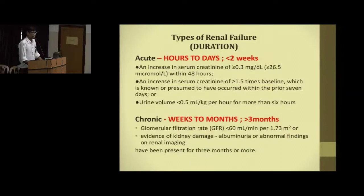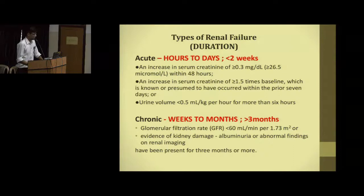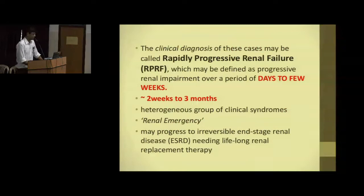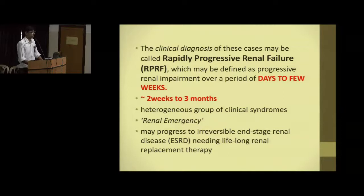This was diagnosed as rapidly progressive renal failure because the history was less than two months and on presentation he had a very high creatinine. Renal failure is defined as increased serum creatinine of more than 0.3 mg/dL within 2 days, or more than 1.5 times the baseline in 2 weeks. Two weeks to three months is the window of maximum kidney damage in RPGN — this is a renal emergency, as every day more nephrons are lost, causing irreversible damage and potential progression to end-stage renal disease.